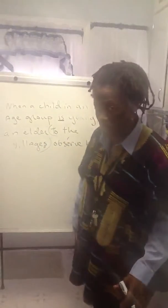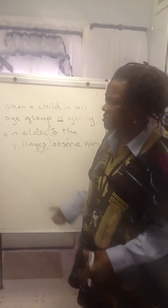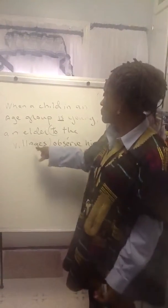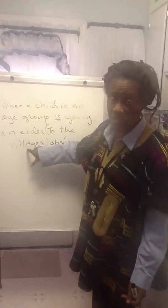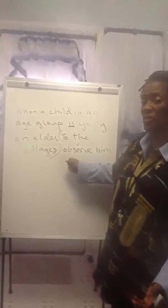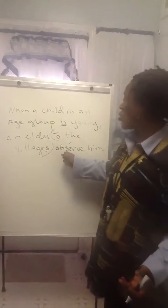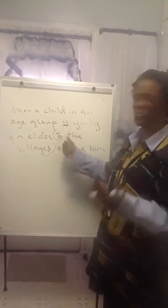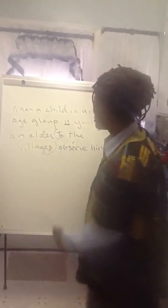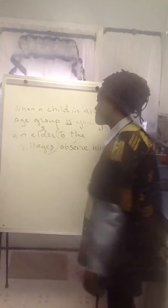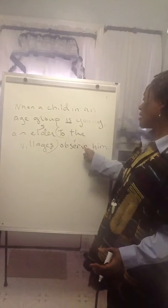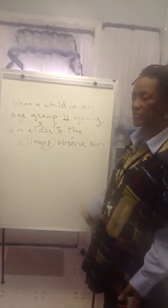You cannot have your verbs and subjects inside of prepositional phrases. That's basically what the rule is — there may be some exceptions I haven't found. So 'villages' is not going to be the subject. Well, what is the subject? You have to find the subject; you have to ask the question: who or what observes him? It's the elder.